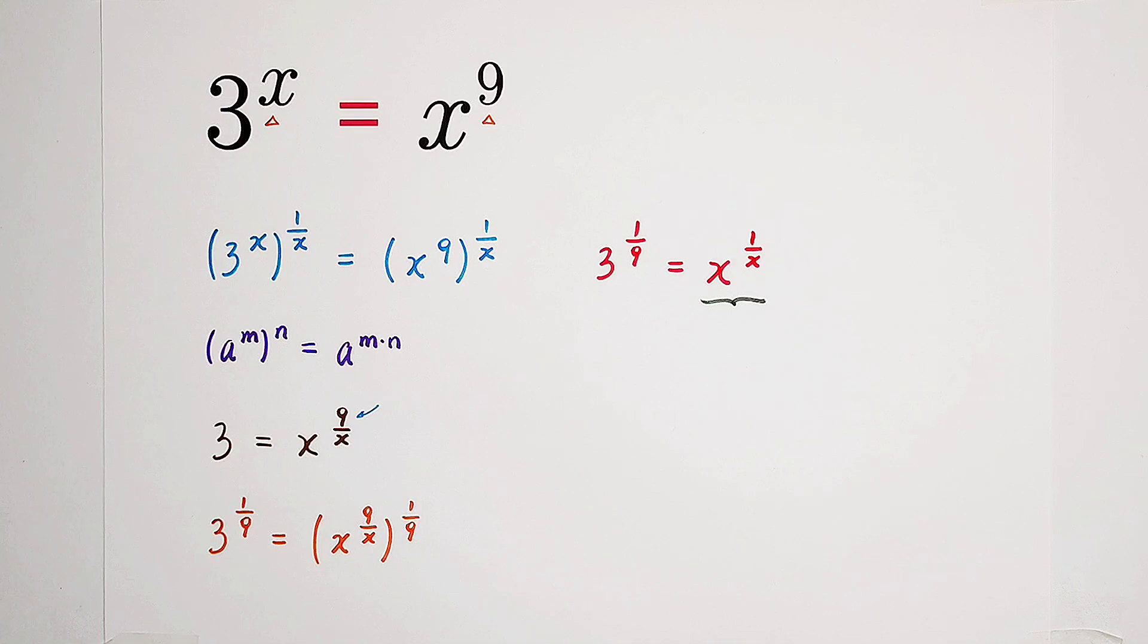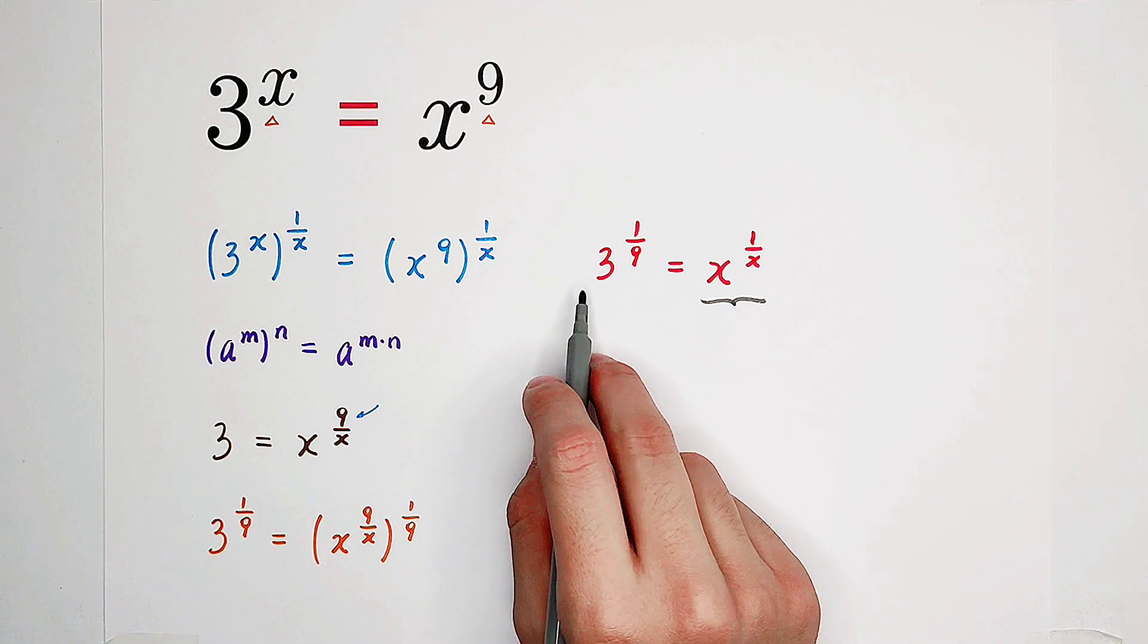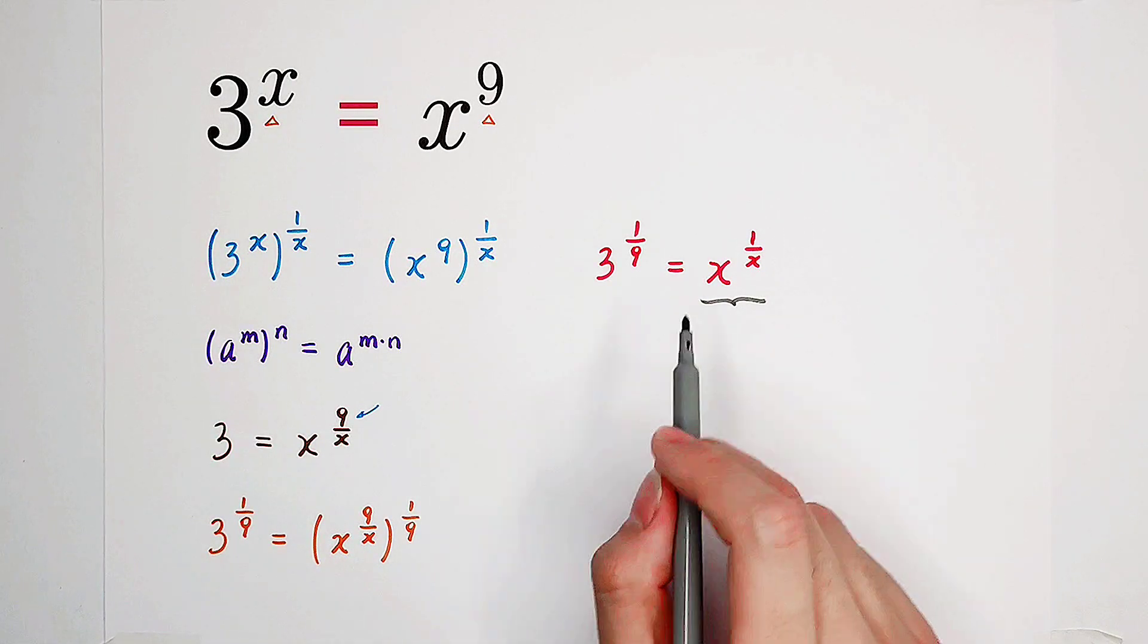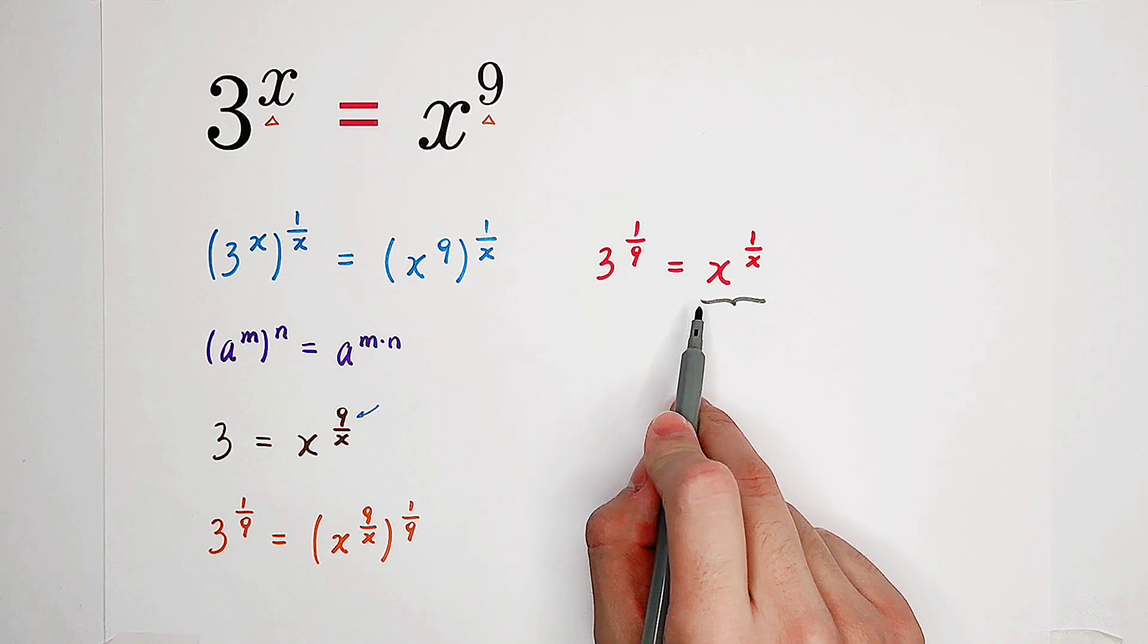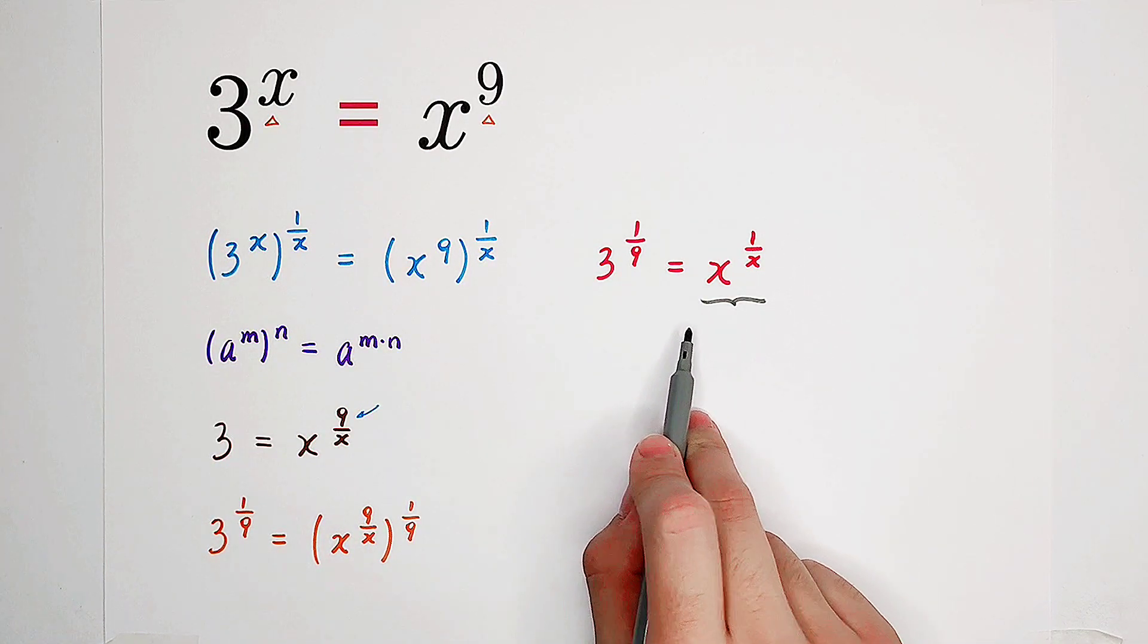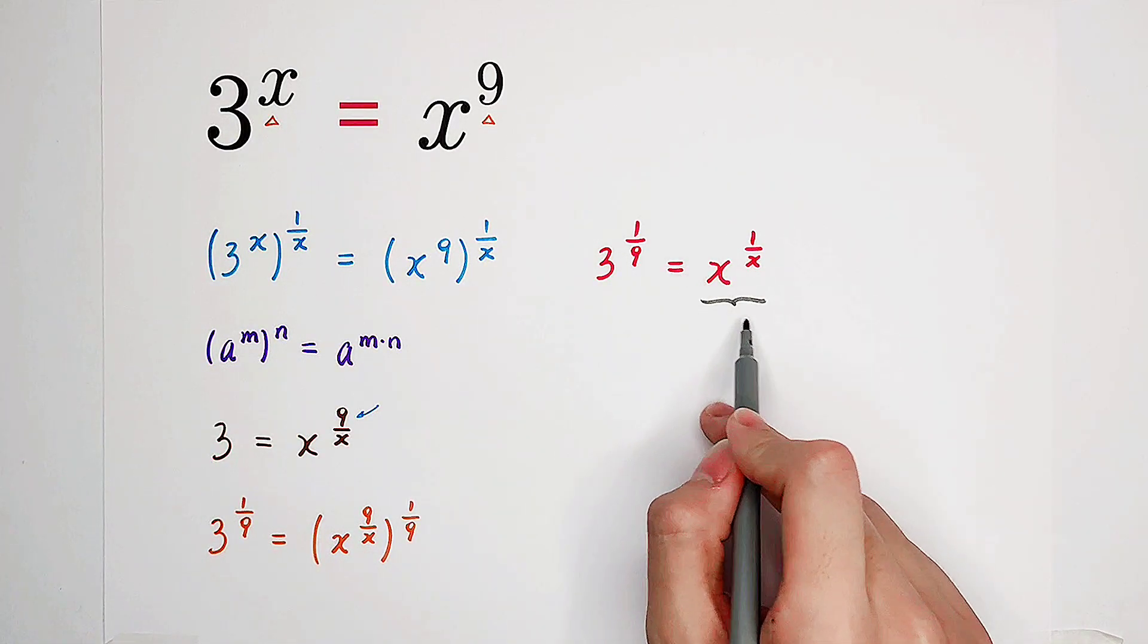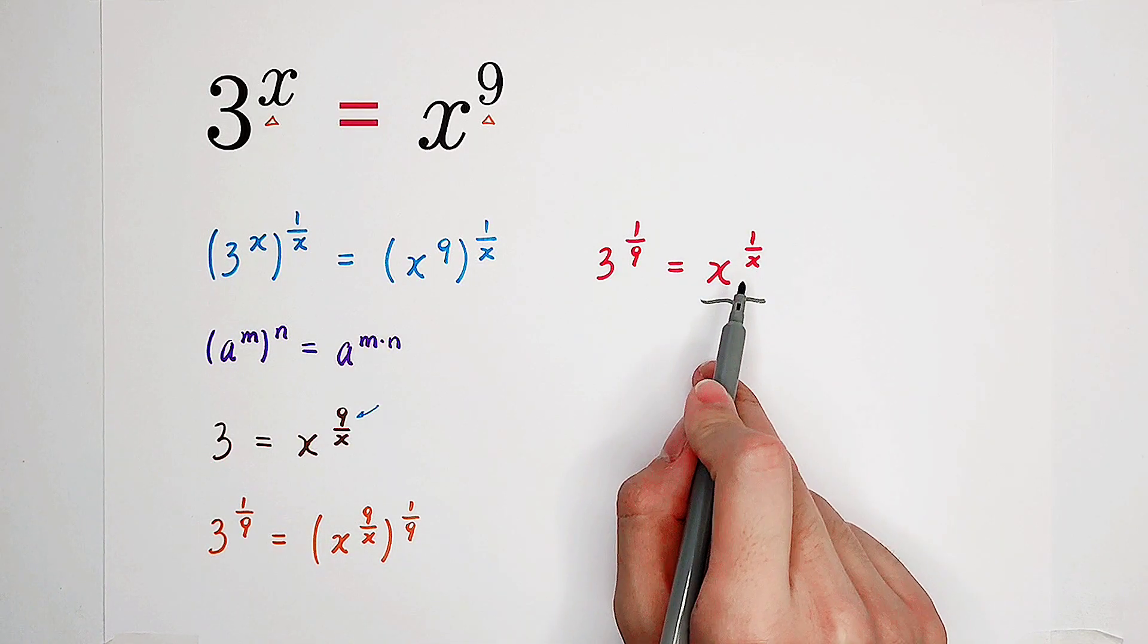A very good form. However, the left-hand side, 3 to the power of 1 over 9, it doesn't have the form something to the power of its reciprocal. Okay, so we hope that the left-hand side, 3 to the power of 1 over 9, can also be written in this form. Something to the power of 1 over it.